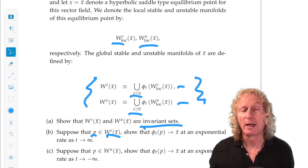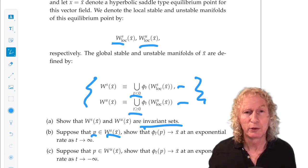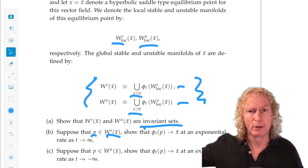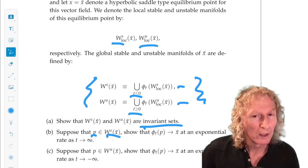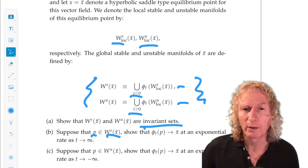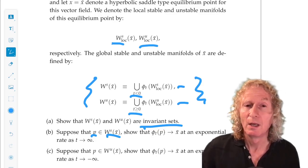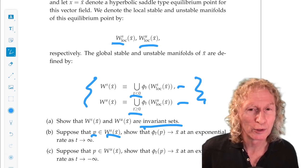in this case, doesn't have to be the origin, at an exponential rate. So what you need to do is start way out here in the stable manifold. Let it flow until it gets into that neighborhood where the local exponential decay to the origin takes place.